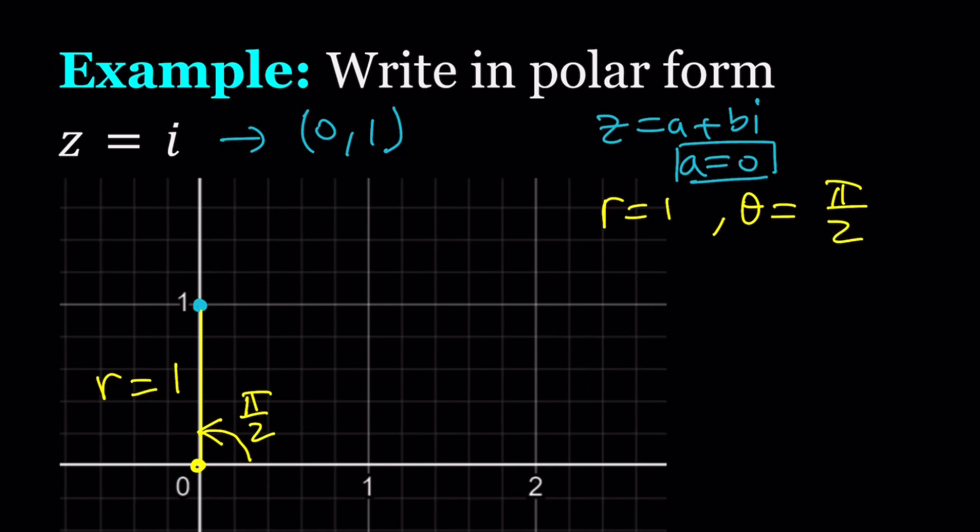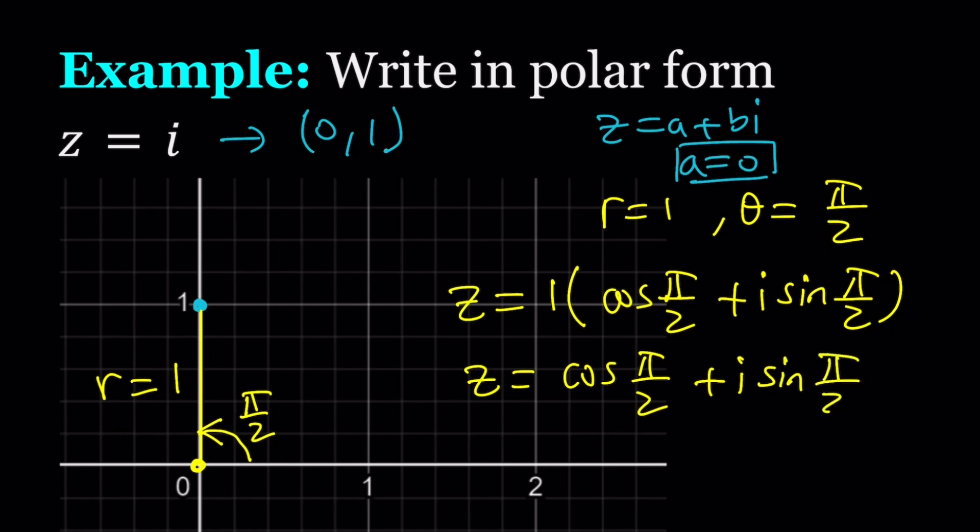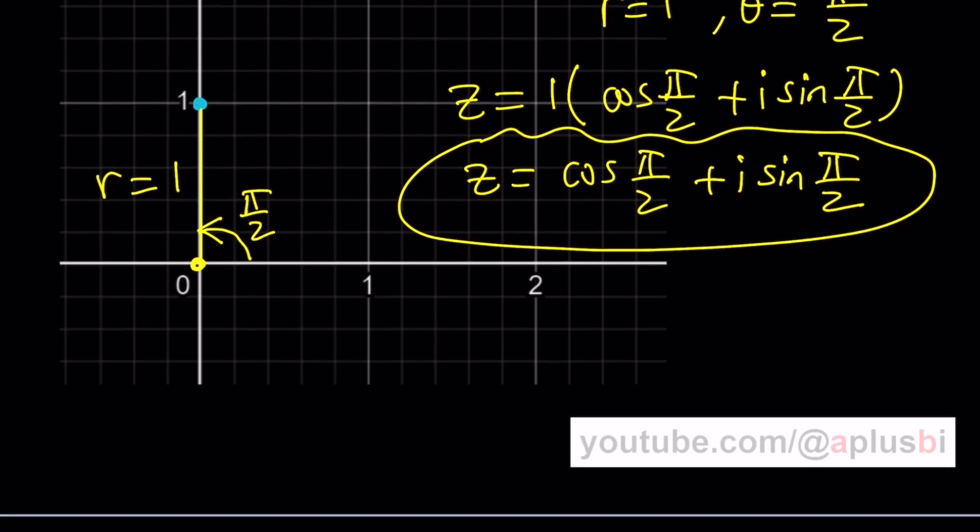So we got R equals 1 and theta equals pi over 2. You have everything you need. Now let's write it in polar form. Z equals R, which is 1, times cosine pi over 2 plus I sine pi over 2. And of course, since R is 1, you don't need to write it. You can just write your number as cosine pi over 2 plus I sine pi over 2. Again, the angle is going to be in radians. Pi over 2 is in radians. Easy, right? And later on, we're going to talk about a more compact way to write this. Thanks to Euler, we'll talk about that in detail later.